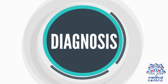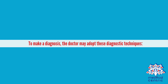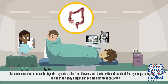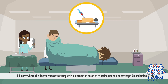Diagnosis and treatment: To make a diagnosis, the doctor may adopt these diagnostic techniques. Anorectal manometry for older children – the doctor inflates a small balloon inside the rectum to see if the anal muscle relaxes; if the muscle does not respond, the child may have HSCR. Barium enema – the doctor injects a dye via a tube from the anus into the intestine, helping highlight the inside of the body's organs on x-rays. A biopsy – the doctor removes a sample tissue from the colon to examine under a microscope. An abdominal x-ray may also be used.